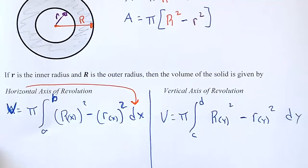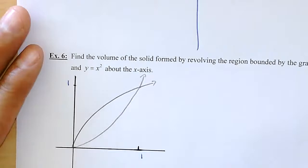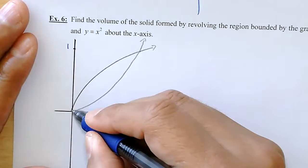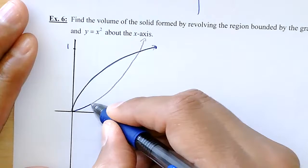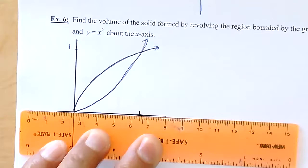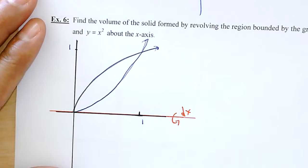I have a washer when there's a hole in the region I'm rotating. Let's look at the first example — it's already drawn. I'm asked to find the volume of the solid formed by revolving the region bounded by the square root of x and x squared, rotating about the x-axis. My axis of revolution is horizontal, so just like before, I'm going to be in dx.